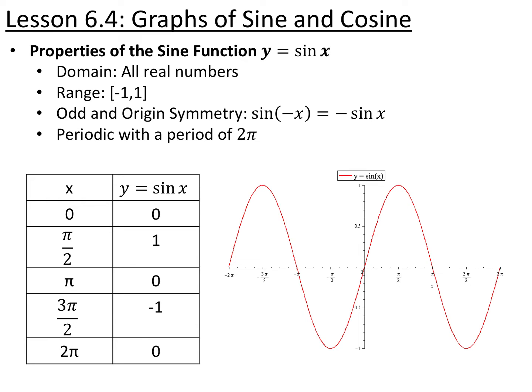Less than 6.4 covers the graphs of sine and cosine. Here's a reminder of some properties of the sine function, y equals sine of x. The domain is all real numbers, the range is negative one to one. It's odd, which means it has origin symmetry, so sine of negative x equals negative sine of x. And it's periodic with a period of 2 pi.